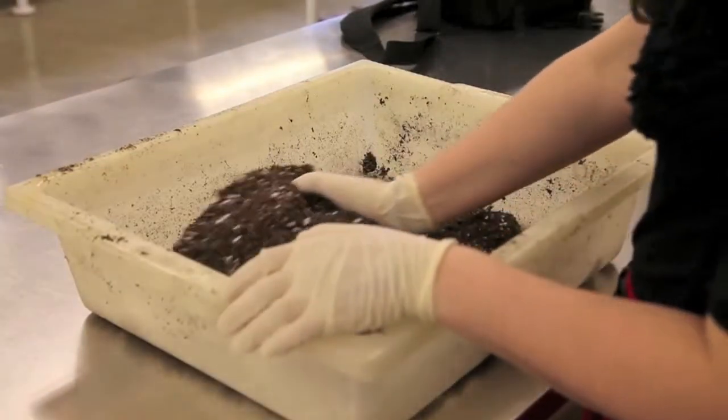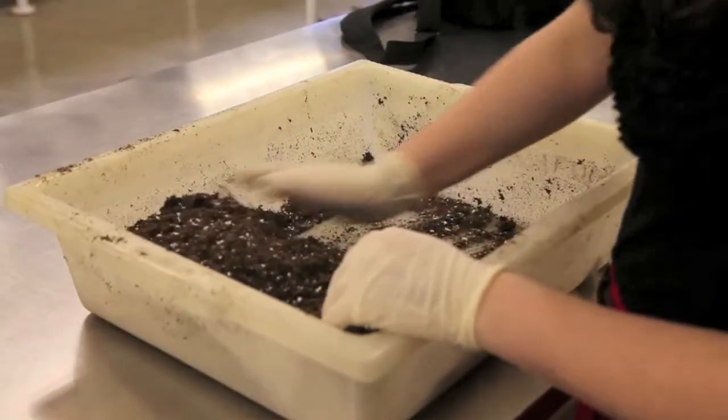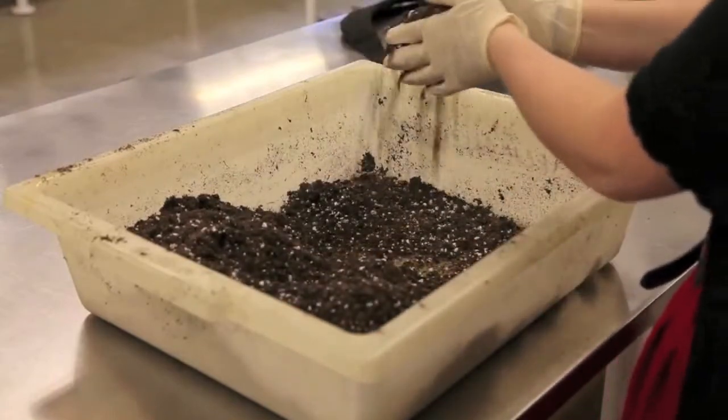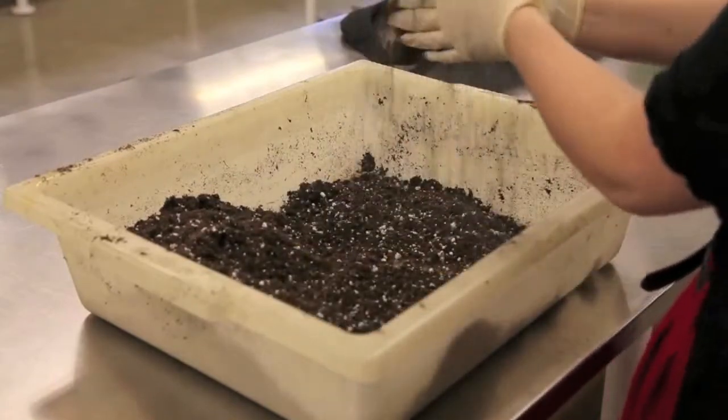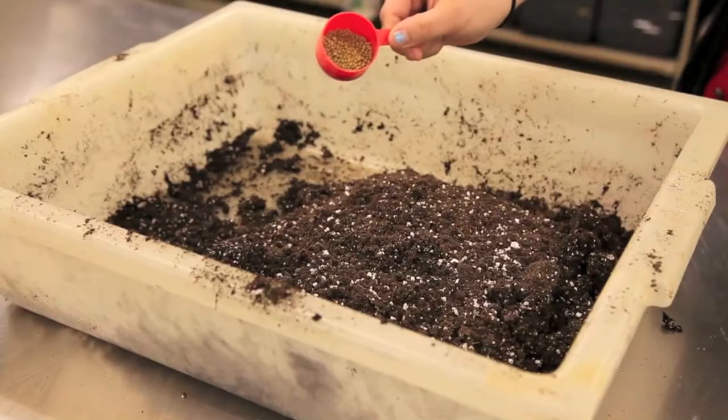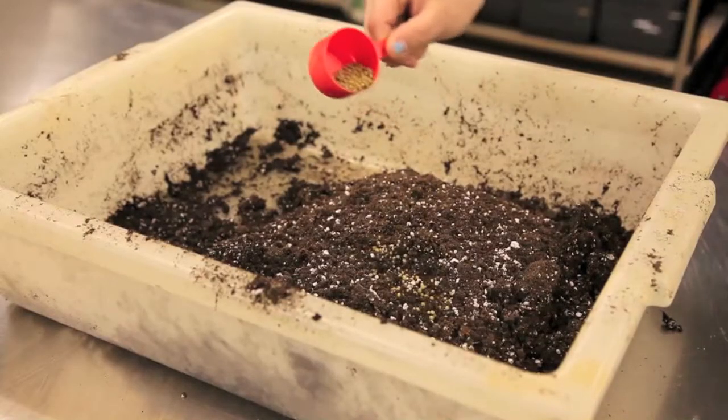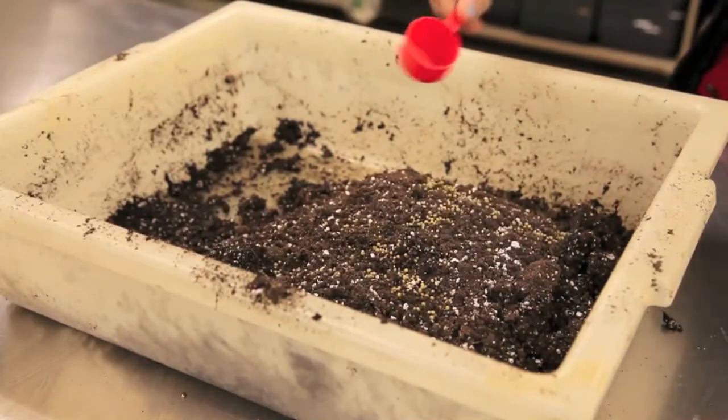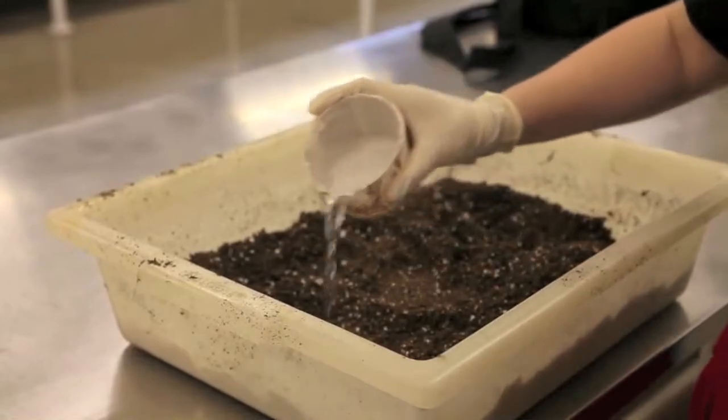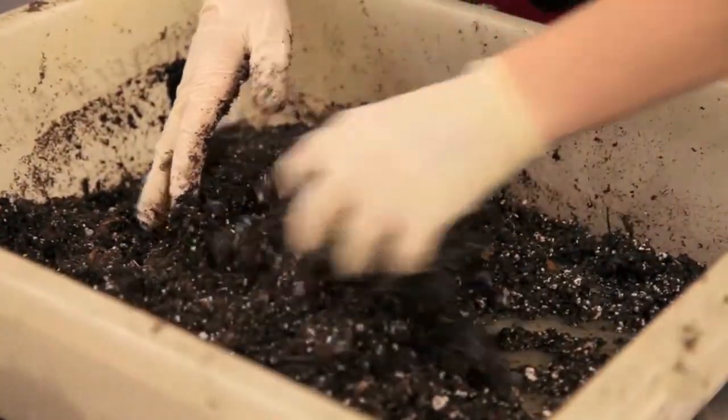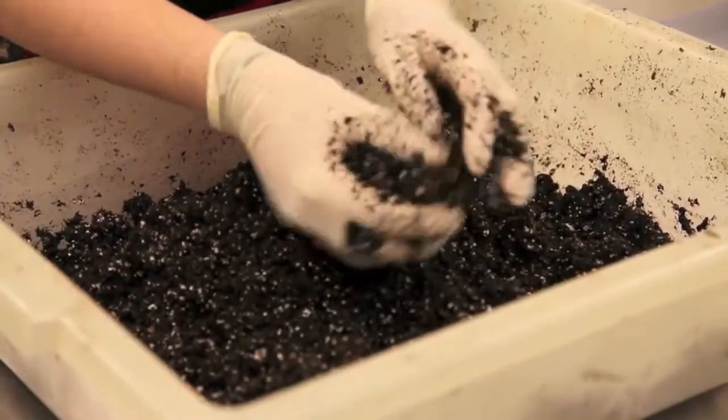Start by measuring the soil you'll be using into a Tupperware or other container. Then, use your hands to break up any clumps and remove any debris from the soil. Leave it as smooth as possible. Depending on the soil you're using, you may also choose to add a slow-release fertilizer such as Osmocote to your container. Next, add water to your soil and use your hands to mix it in, ensuring that the water is evenly spread throughout the entire soil container.